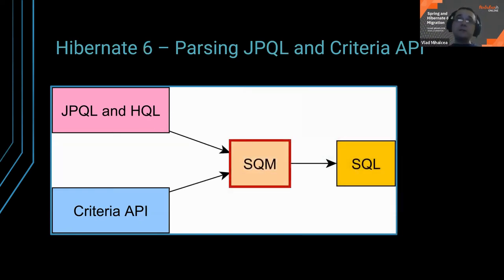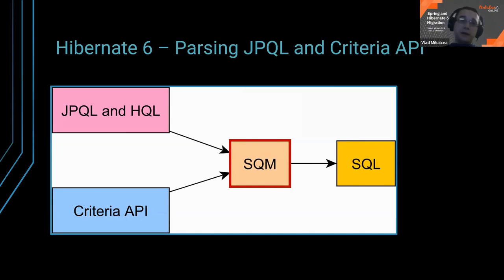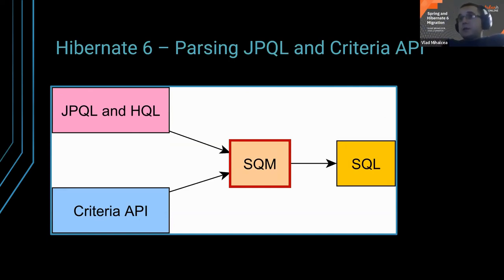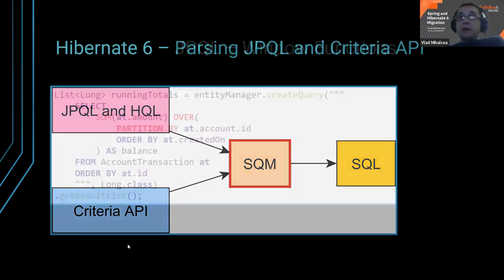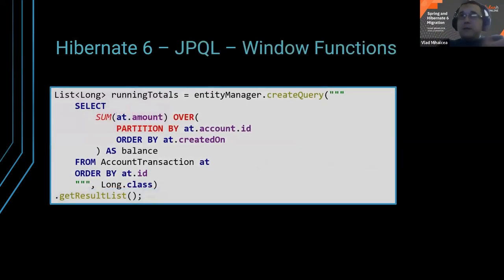In Hibernate 6, there's a new parser called SQM (Semantic Query Model). Both JPQL and Criteria API are parsed to this SQM, and that one is used to generate the SQL. The benefit is that you can concentrate all features in SQM, which will benefit both JPQL and Criteria API. We're going to see what exactly that means.